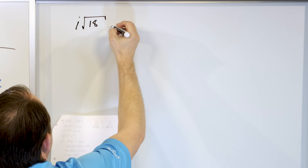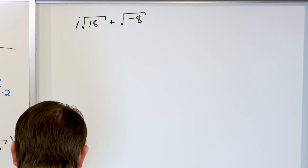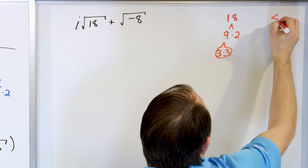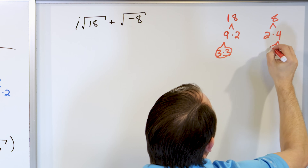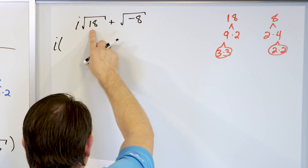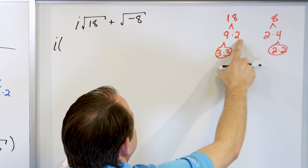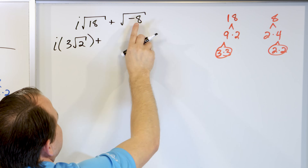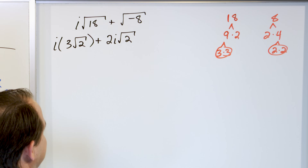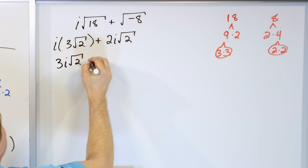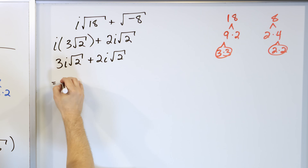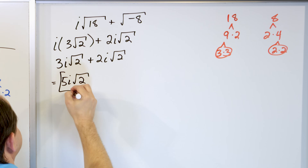What about i times the square root of 18 plus the square root of negative 8? First we simplify the radicals: 18 is 9 times 2, giving root 9 as 3, so root 18 is 3 root 2. For 8: it's 2 times 4 which is 2 times 2, so root 8 is 2 root 2. Now i times 3 root 2 is 3i√2. The square root of negative 8 gives 2 times i times root 2, written as 2i√2. We have matching radicals and matching i's, so 3i√2 plus 2i√2 equals 5i√2. That's the final answer.